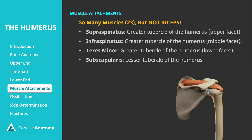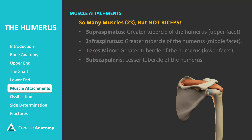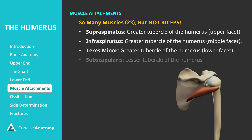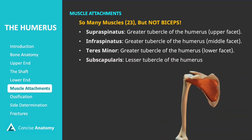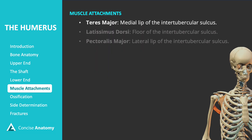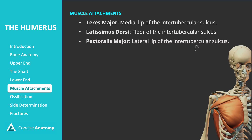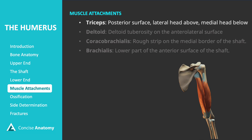The humerus has numerous muscle attachments, 23 in total. All four rotator cuff muscles attach to the tubercles of the humerus. The supraspinatus attaches to the upper facet of the greater tubercle, the infraspinatus to the middle facet, and the teres minor to the lower facet. The subscapularis attaches to the lesser tubercle. The teres major attaches to the medial lip of the intertubercular sulcus. The latissimus dorsi attaches to the floor of the sulcus. The pectoralis major attaches to the lateral lip of the intertubercular sulcus. The triceps attach to the posterior surface of the humerus, with the lateral head attaching above and the medial head below.